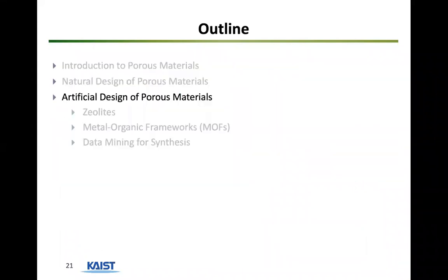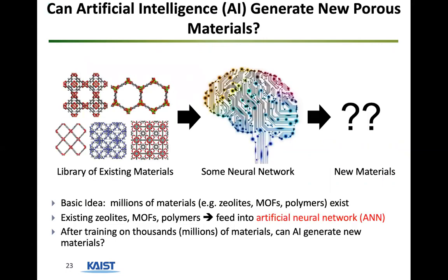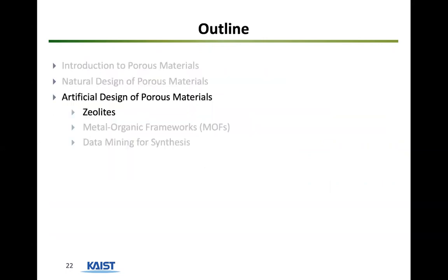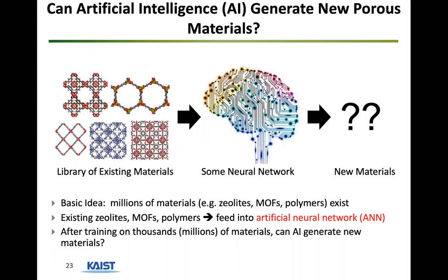That was an example of natural design where we came up with an algorithm to connect two materials. But we want to let the machine do all the work in creating new materials, because it's hard to come up with good designs. So we've been looking into artificial design of porous materials, and we'll go into three different subcategories — starting with zeolites.